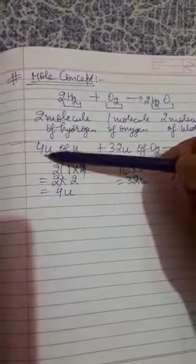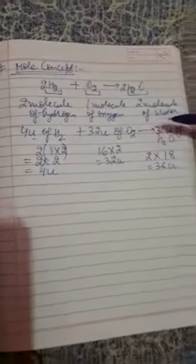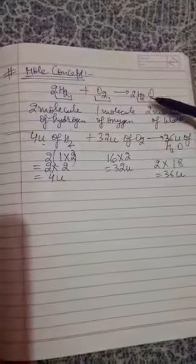Or we can say that when 4U of hydrogen react with 32U of oxygen, it will form 36U of water. Now where do these values 4U, 32U, and 36U come from?